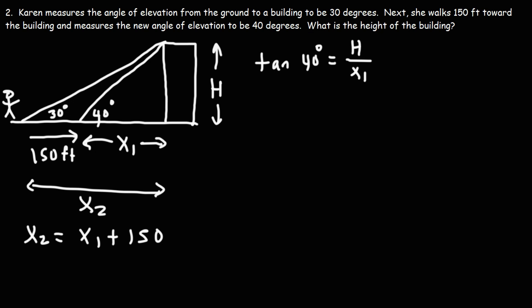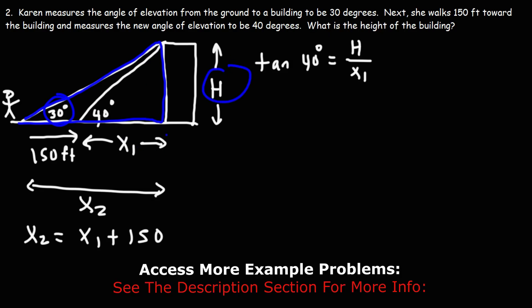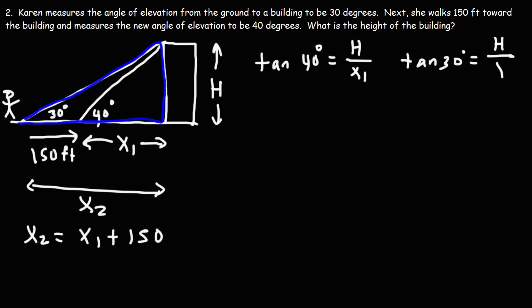The second formula, if we focus on the larger triangle, it's tan 30 is equal to the opposite side h divided by all of this, which is the same as x2. So we have tan 30 is equal to, not the hypotenuse, but the opposite side over the adjacent side, which is x2.